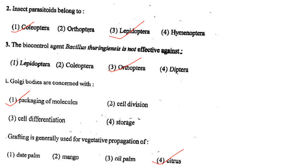Next one: Golgi bodies are concerned with option 1, packaging of molecules; option 2, cell division; option 3, cell differentiation; option 4, storage. Answer is option 1: packaging of molecules.